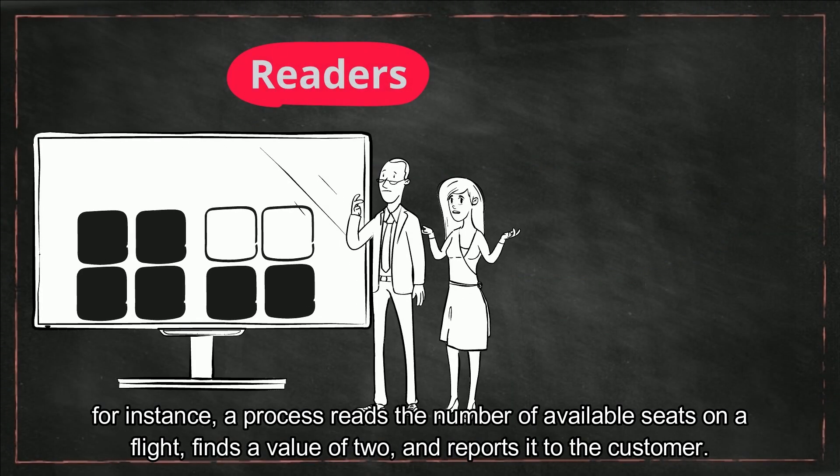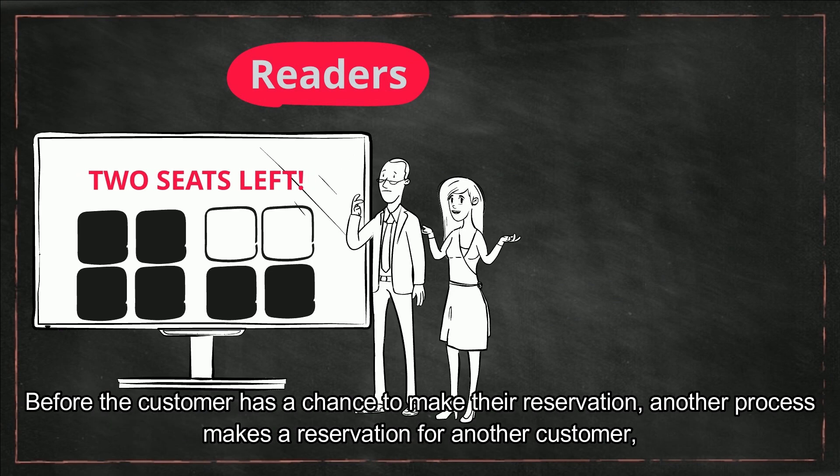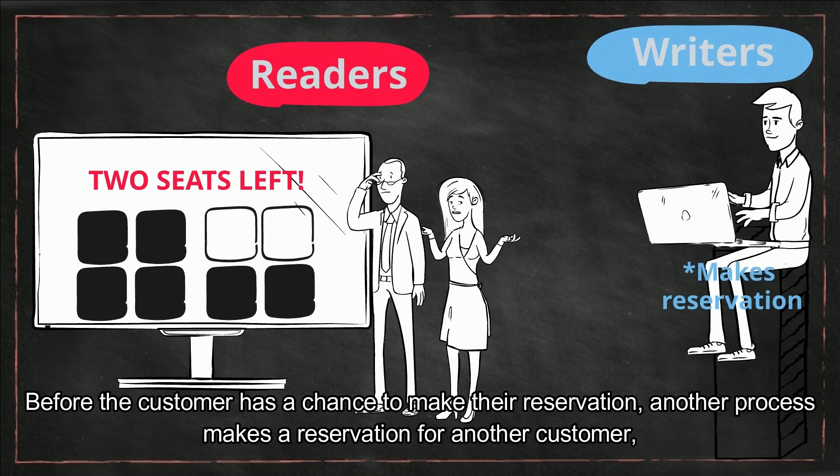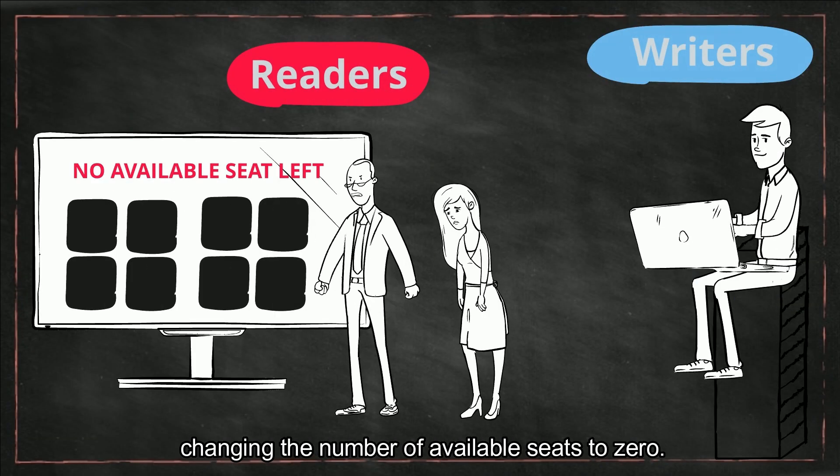For instance, a process reads the number of available seats on the flight, finds a value of 2 and reports it to the customer. Before the customer has a chance to make their reservation, another process makes a reservation for another customer, changing the number of available seats to zero.